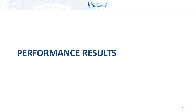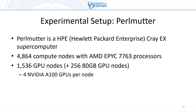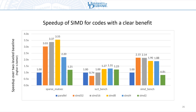Now I want to talk about the performance benefits and costs of these execution models. The machine we're running on is the Perlmutter supercomputer, using a single NVIDIA A100 GPU. For this first graph, we're looking at three different benchmarks each of which have a very clear and obvious benefit from using all three levels of parallelism.